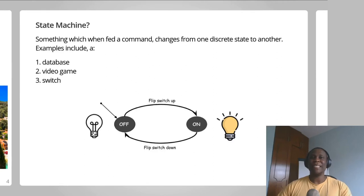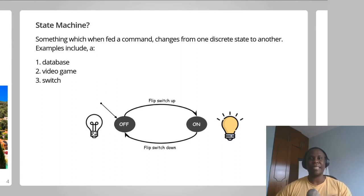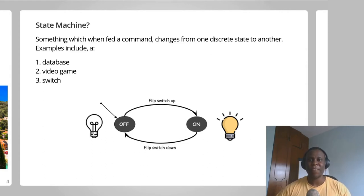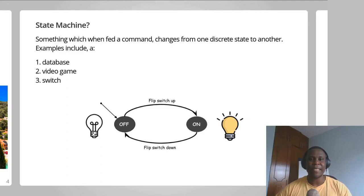So what is a state machine? A state machine is something which, when fed a command, changes from one discrete state to another. A good example of a state machine is a database which, if you feed it a query, might change from one state to another. If you run an insert query against a database, the database will change from a state where it didn't have the data to a state where it has this data. In this example, the database is the state machine and the insert query is a command that changes the database from one state to another.